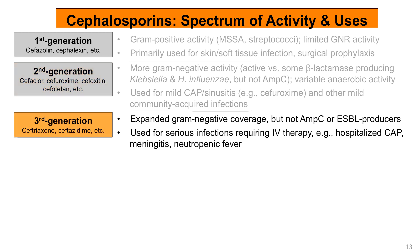The third generation cephalosporins have expanded gram-negative coverage, but again, not against AmpC or ESBL-producing bacteria. These are used for more serious infections requiring IV therapy in the hospital — for example, community-acquired pneumonia that leads to hospitalization, meningitis, and neutropenic fever.